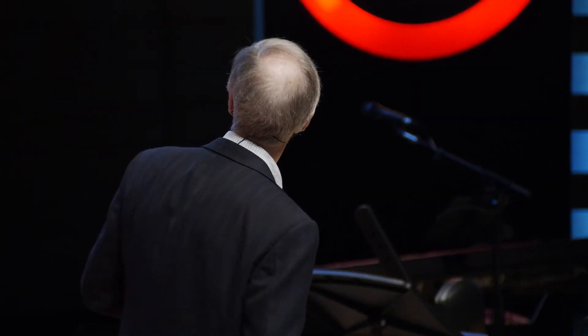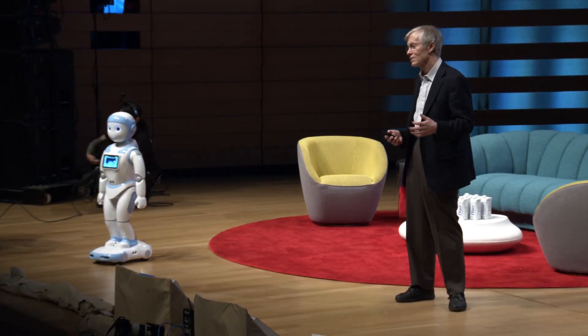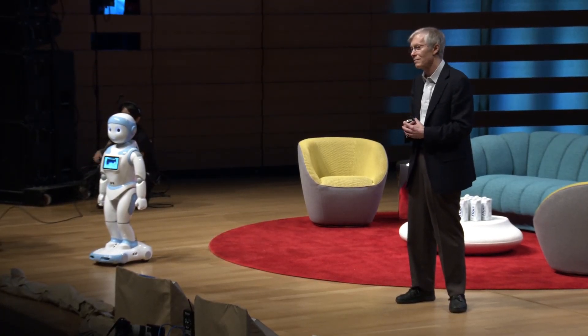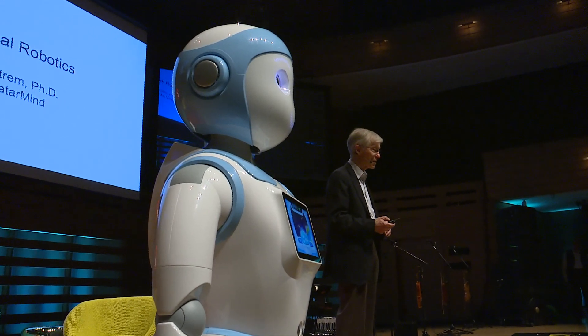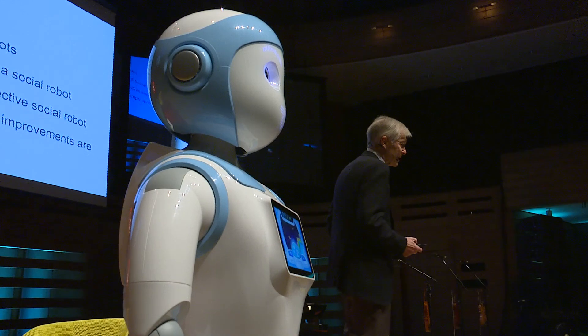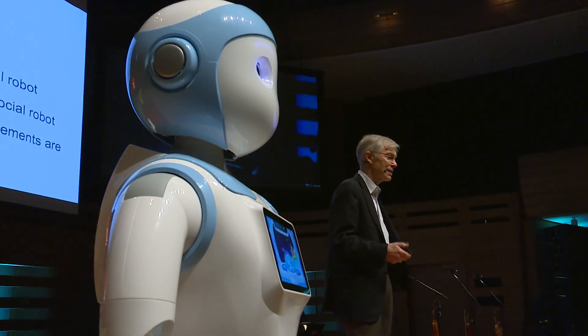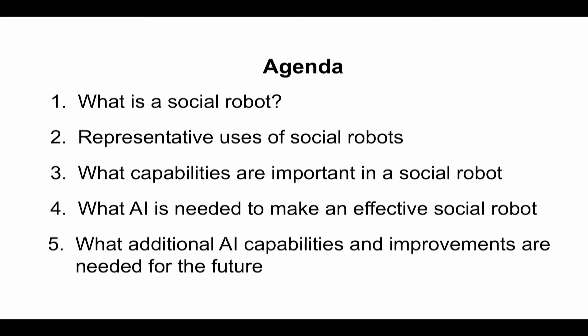We're going to talk today a little bit about social robotics. The talk I'm going to give is a lot more dense — more along the lines of a semi-technical discussion. I probably should have lightened it up a little bit. These are the things we're going to talk about: what is a social robot, how do you use social robots, what are they good for, what capabilities are important, what AI is needed to make an effective social robot, and what has to come in the future to make the robot fit well into a family or community.